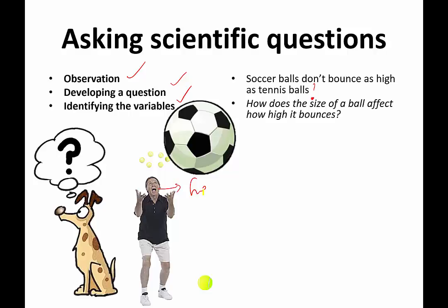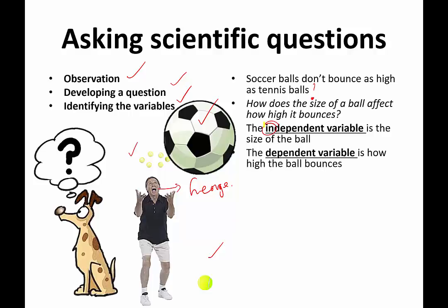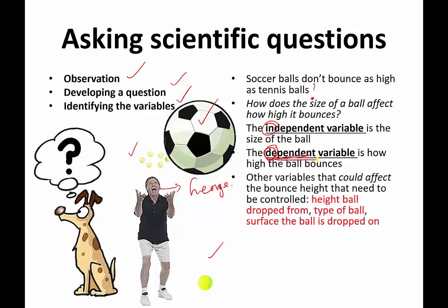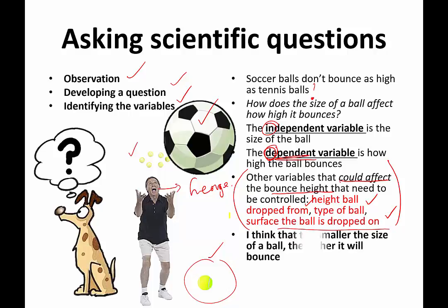The independent variable is the size of the ball — that's what I will change in the experiment. How high the ball bounces depends on the type of ball, so that's the dependent variable. Other variables that could affect bounce height but that we want to keep as controlled variables include: the height the ball is dropped from, the type of surface the ball is dropped on — these can all make a big difference, so you want to keep those things the same.